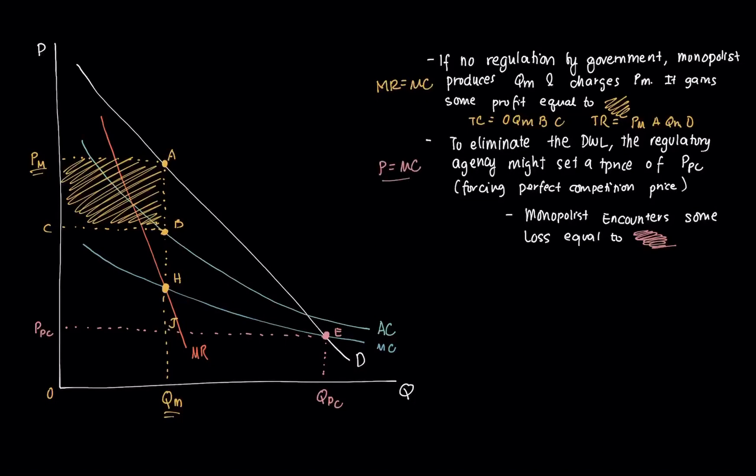That occurs at point E, so this is the quantity that will be produced and the price that will be charged. But note that, because of the declining nature of the firm's cost curves, the price which is PPC falls below the average cost.